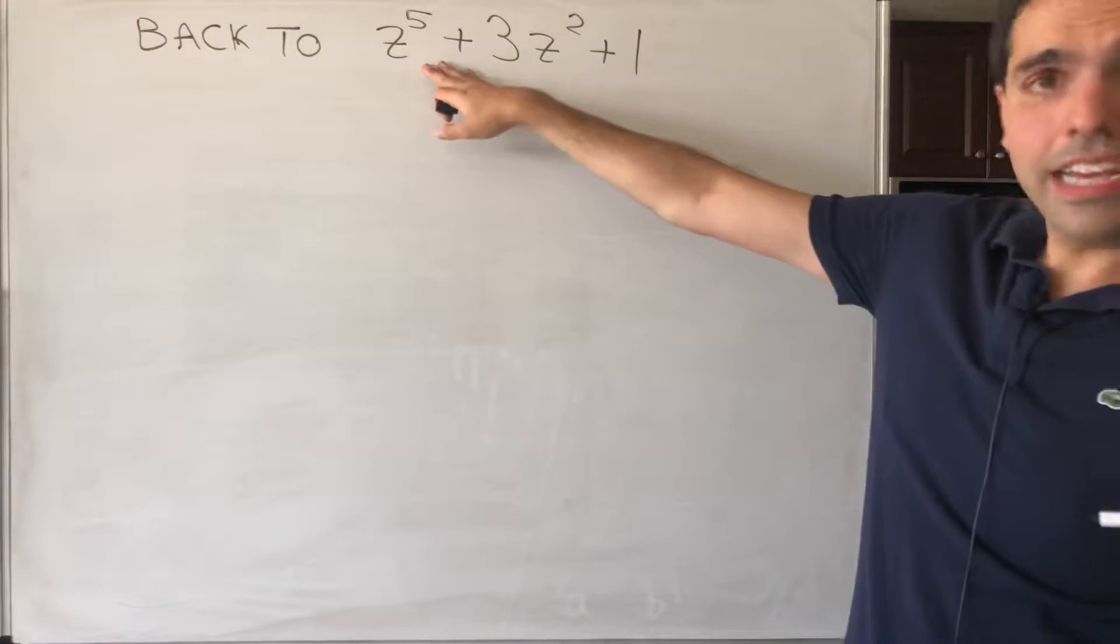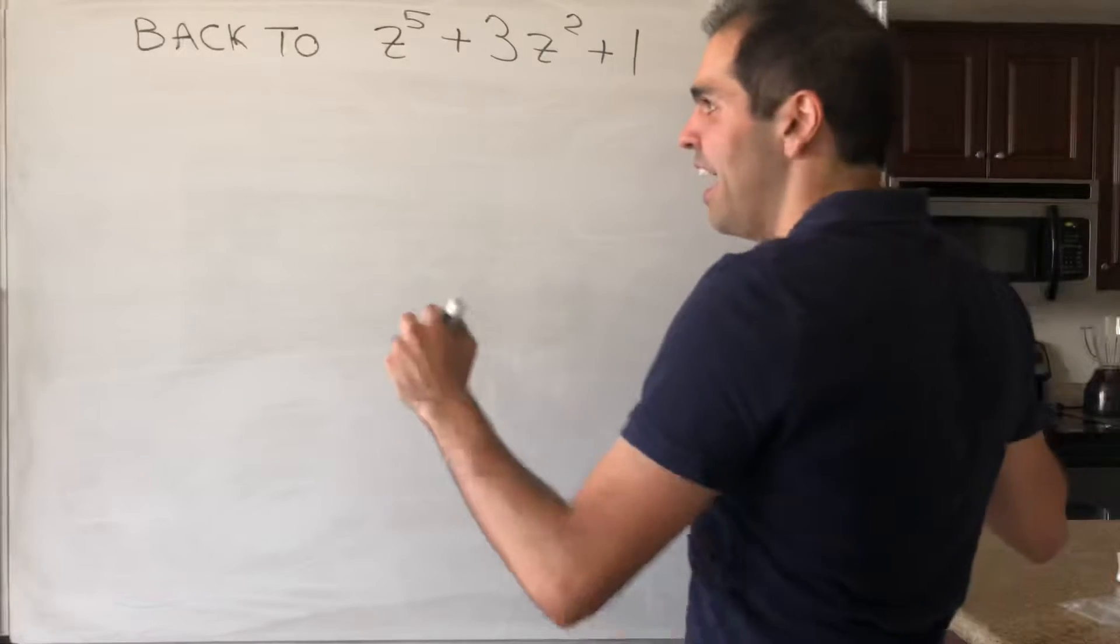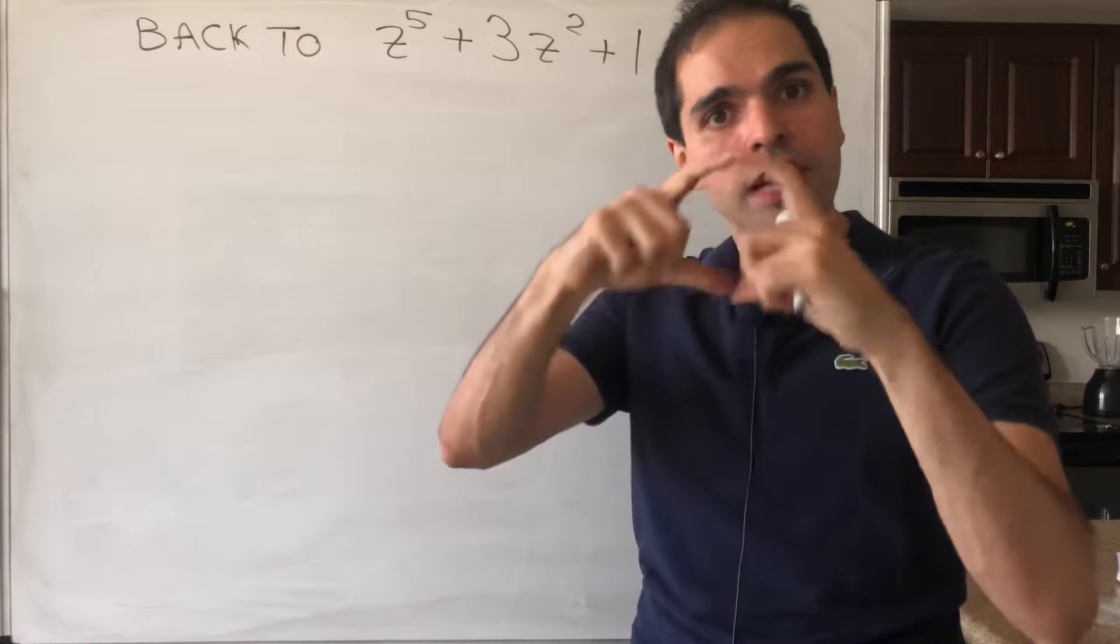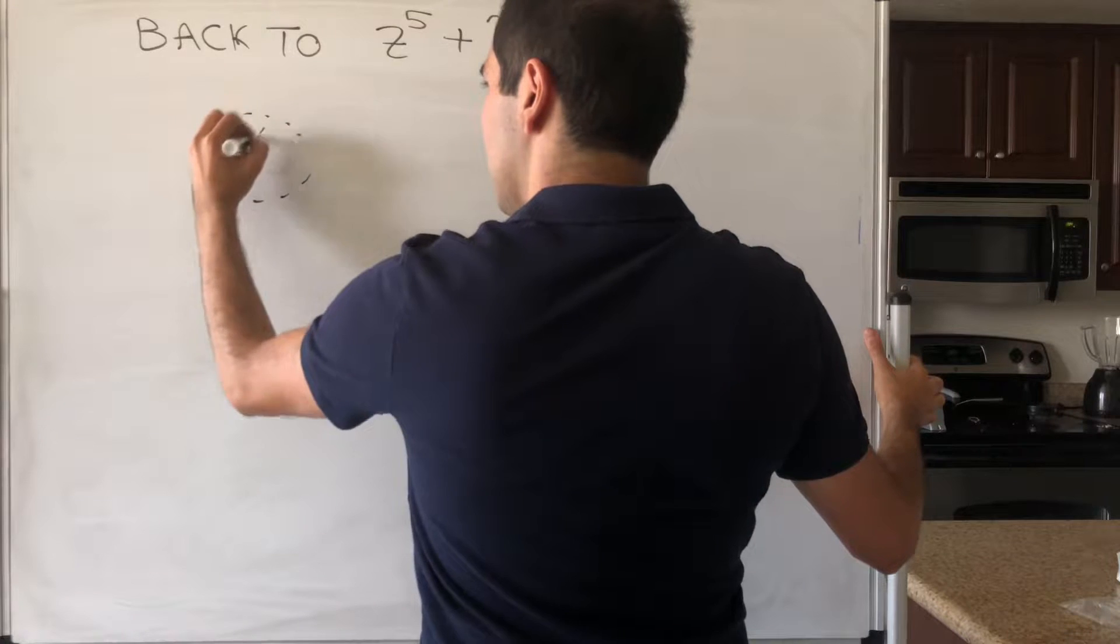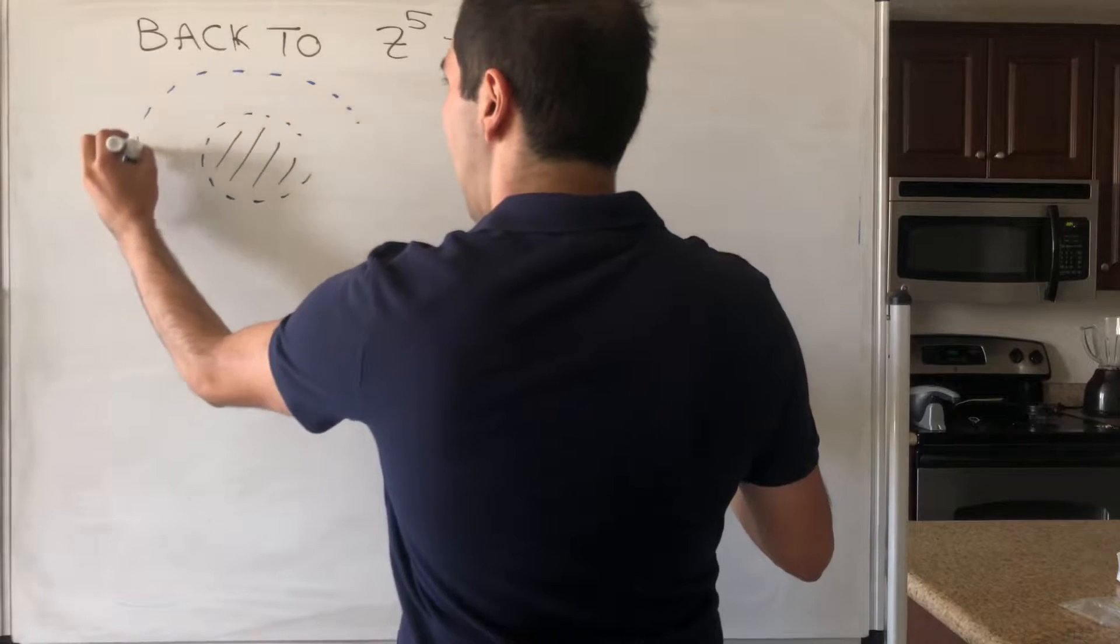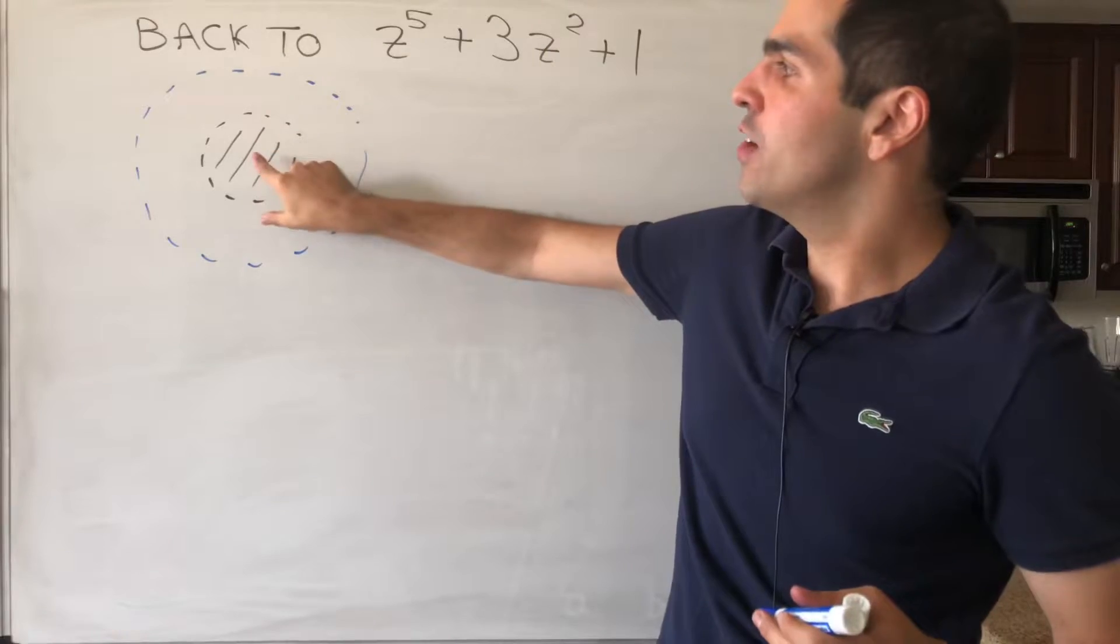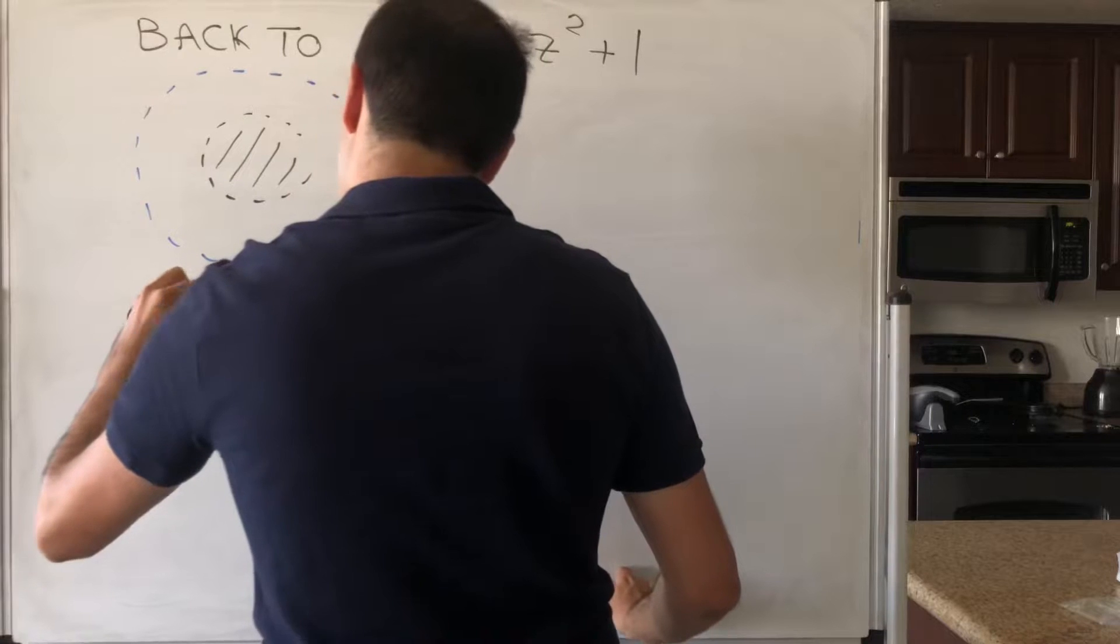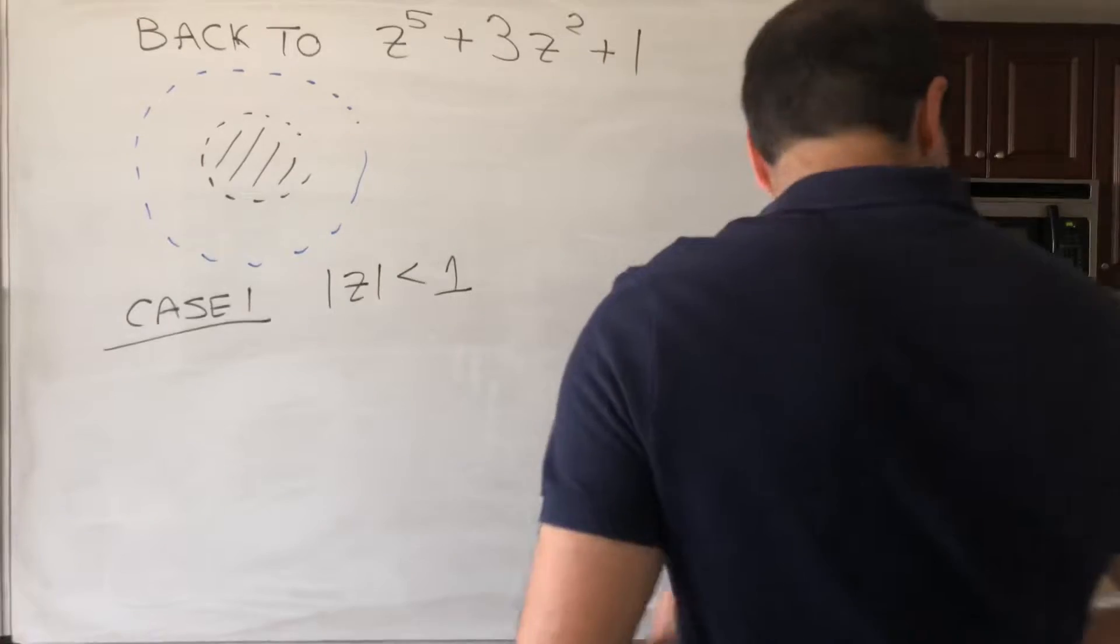So now you can actually put this into action with our complicated polynomial, z^5 + 3z^2 + 1. All right, so now let's go back again to our function, z^5 + 3z^2 + 1. And first, let's try to figure out how many roots are there inside the small circle with radius 1. Because remember, we do have this annulus, and the idea is basically the annulus will be the difference of two disks.